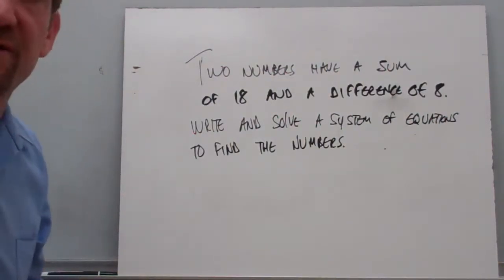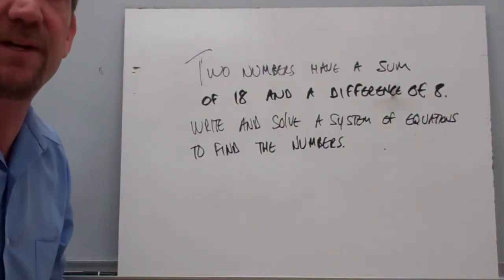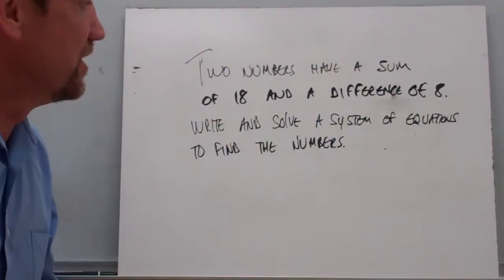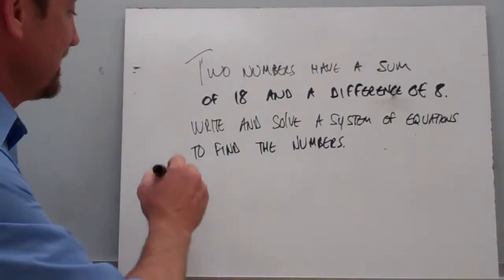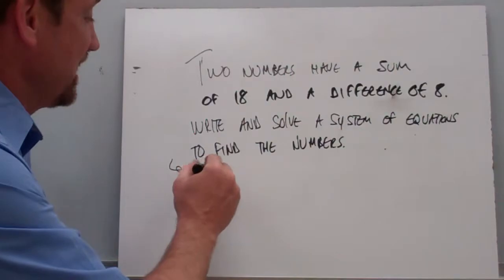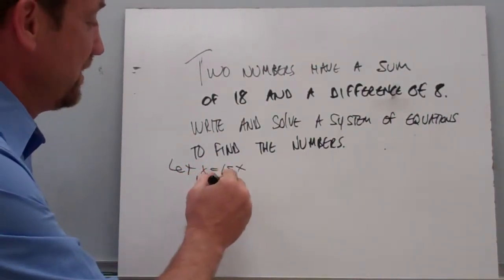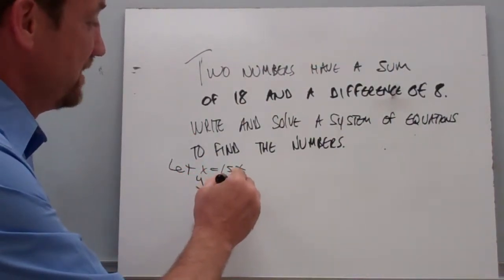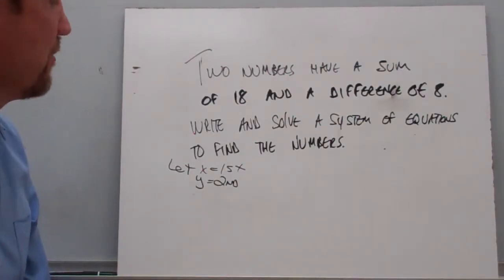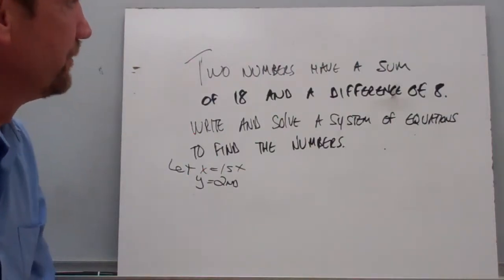Alright, think about it. As always, our first step when you're tackling a problem like this is going to be to write a let statement to define your variables. So let's use our old standbys, x and y. Let x be our first number and we'll have y be the second number. So now we know we're going to use x and y to represent these two numbers that we're looking for.